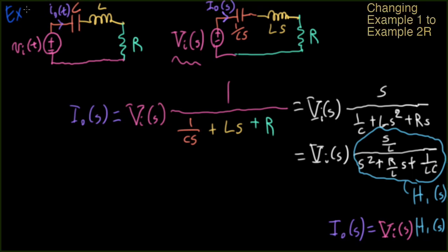Okay, so now let's do a more traditional example. Let's call this next example, example 2R. And what we'll do instead of looking at the output as the current, we'll say that the output is the voltage across the resistor.